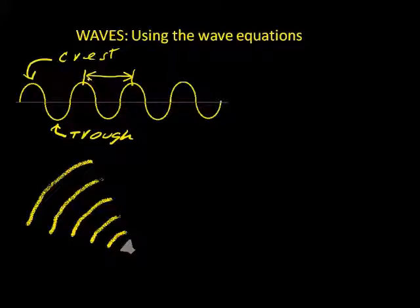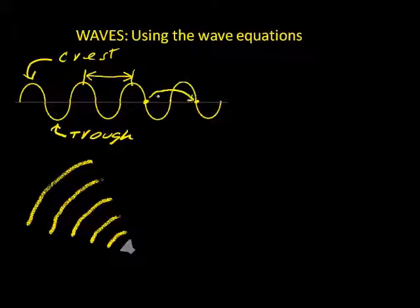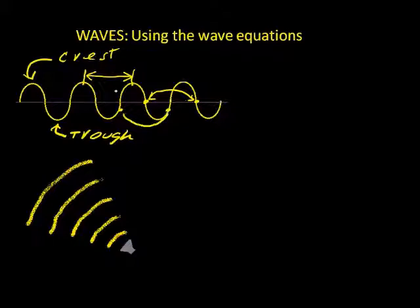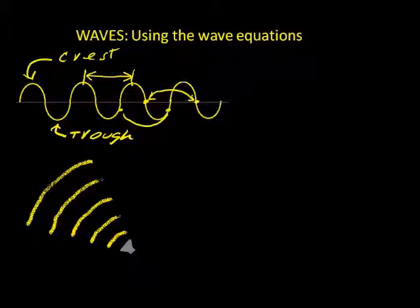And that's absolutely true — crest to crest is the wavelength. But you can also measure the wavelength between any two consecutive like points on the wave. So I could measure the wavelength from this point where the wave crosses this midline to the same consecutive like point over here. That distance is also the wavelength. The wavelength is the distance between any two consecutive like points on the wave.